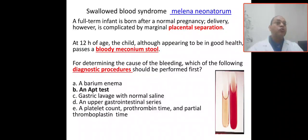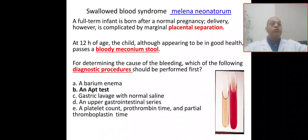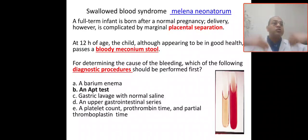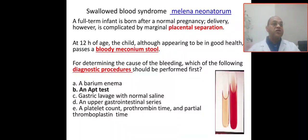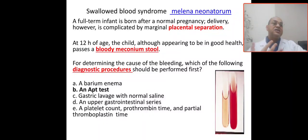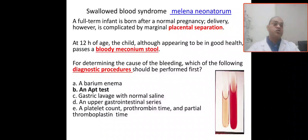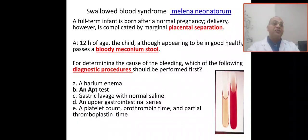Before going for further workup — before ordering barium enema, upper GI study, CBC, or coagulation profile — consider the differential diagnoses: GI bleeding (upper or lower), hemorrhagic disease of the newborn, hemolytic disease of the newborn, coagulopathies, or vitamin K deficiency.